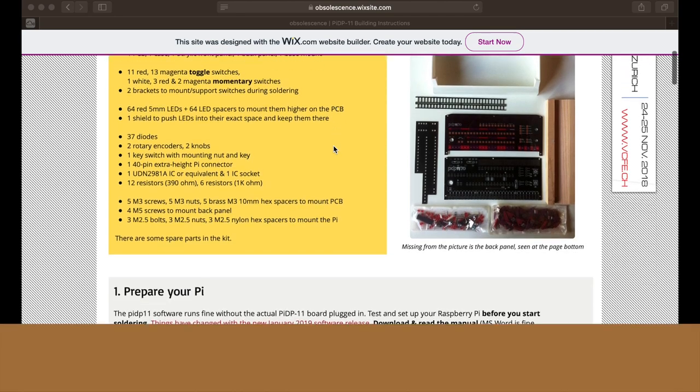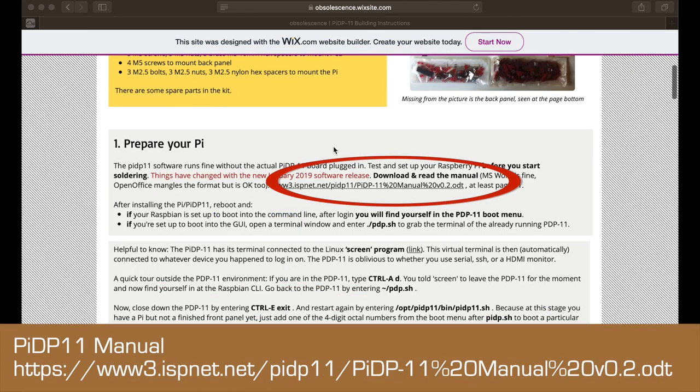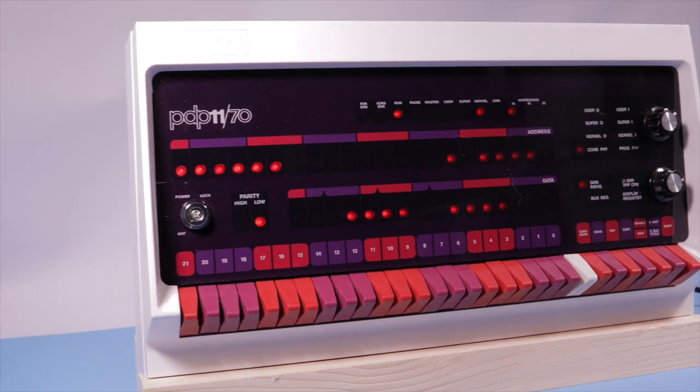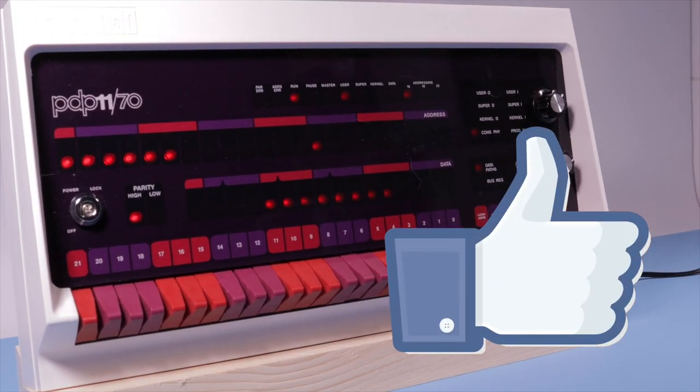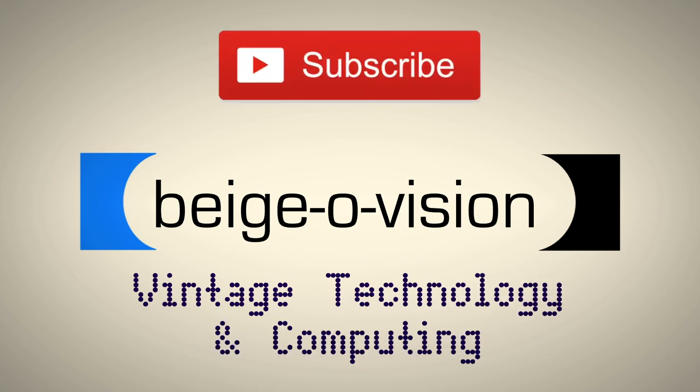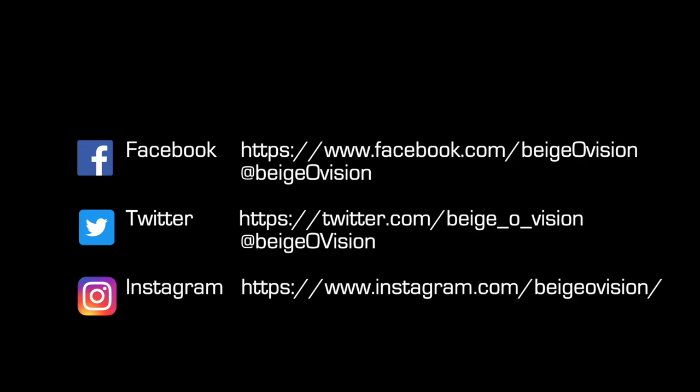Instructions on how to use the Pi DP-11 are in the manual and you can download that from Oscar's site. But for now, let me thank you all for watching this series. If you thought this was useful, give it a like. And if vintage technology and computing are your thing, please subscribe to this channel. We'll have plenty more videos coming up.